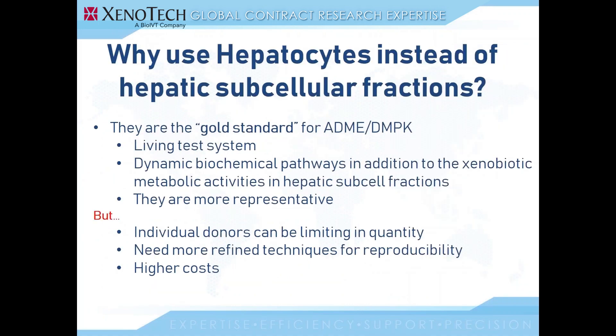So why use hepatocytes instead of hepatic subcellular fractions? Primary hepatocytes are considered the gold standard for ADME/DMPK work because they are the most representative test system. They are the cells with the enzymatic activities that are the most interesting and have the most impact on drug development work. Because they are living, they still contain biochemical pathways that cannot be replicated with subcellular fractions, and the activities are not enriched like liver microsomes, making them more representative and offering a more complete view of what could happen in vivo.